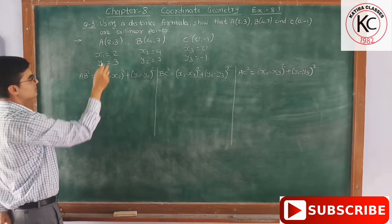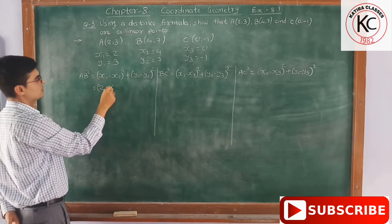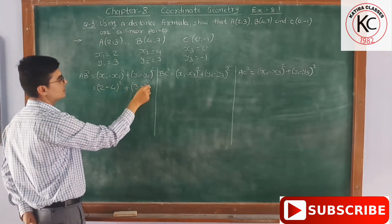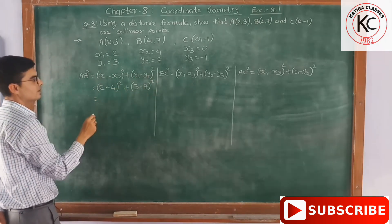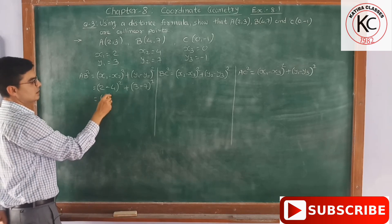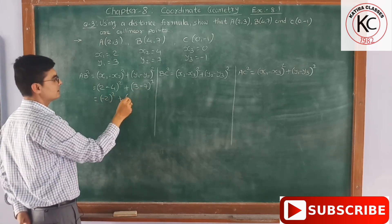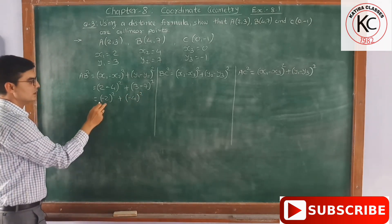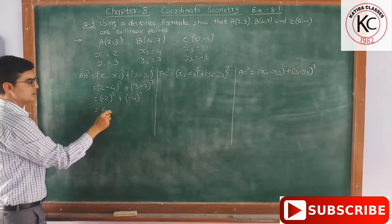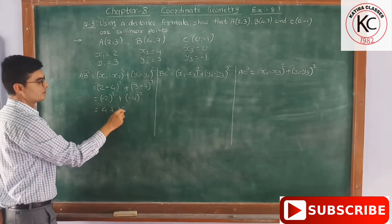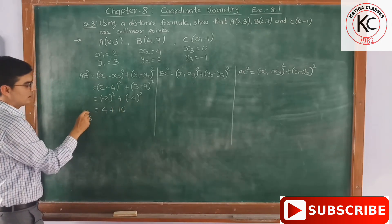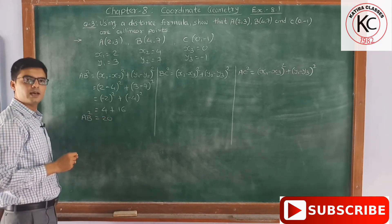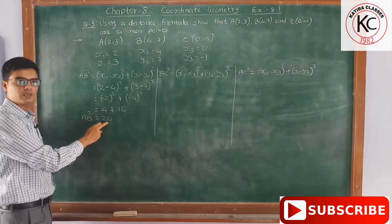Now let's put the values into the formula. Value of x1 is 2, x2 is 4: (2 − 4)² = (−2)² = 4. And y1 is 3, y2 is 7: (3 − 7)² = (−4)² = 16. So AB² = 4 + 16 = 20.